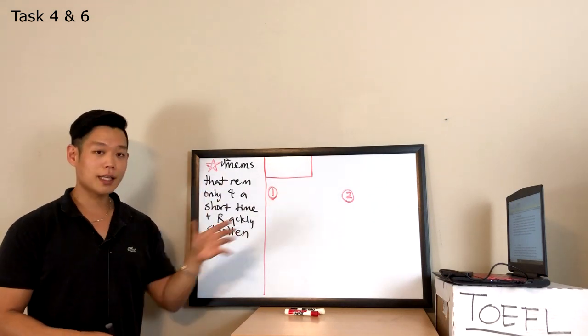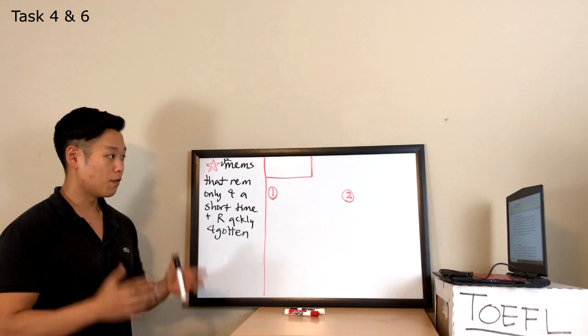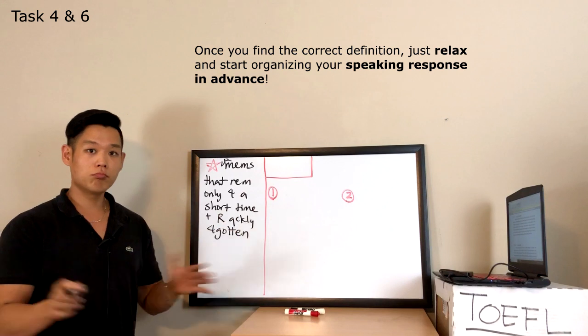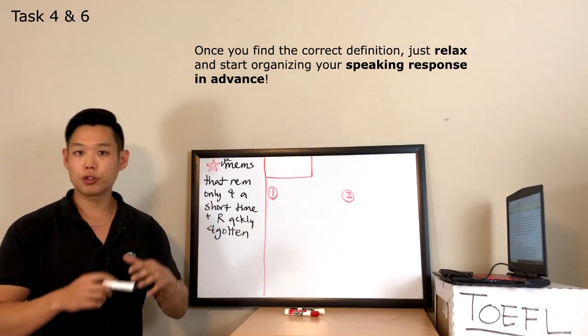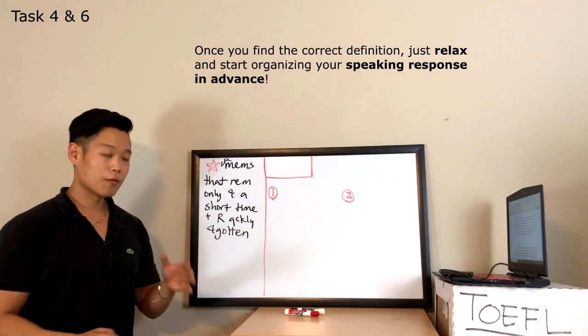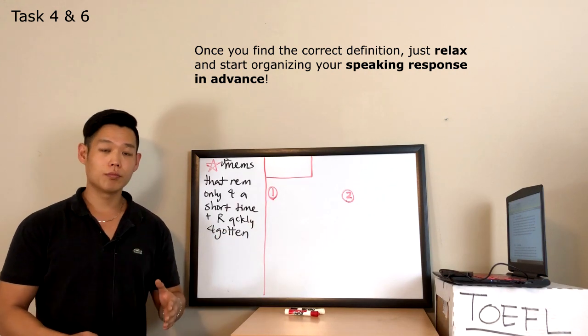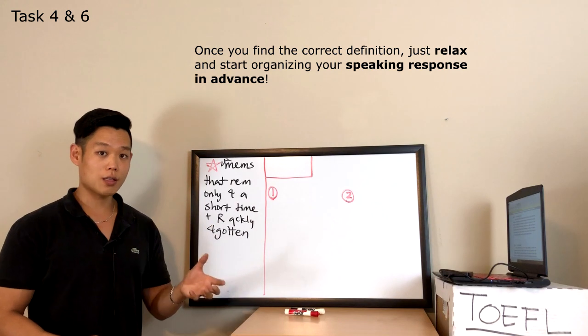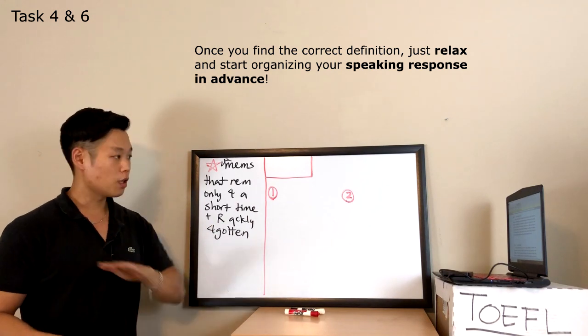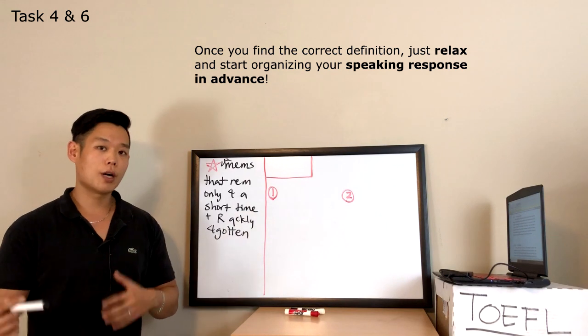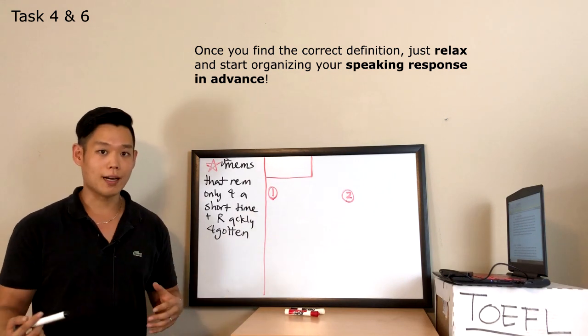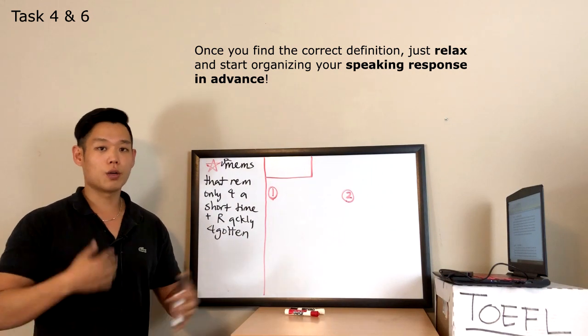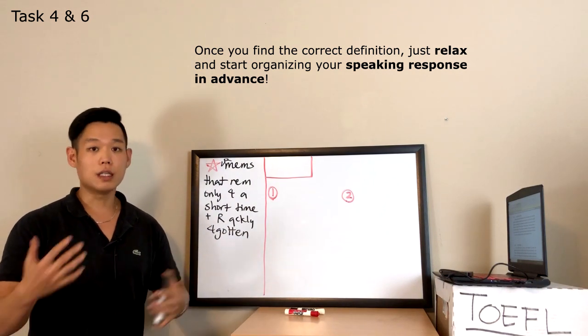All right, now, since the second sentence gave us the definition of short-term memories, you should have written that down. You should have paraphrased it. And then, just relax. Just chill out. Because all you need from the task four reading passage is the definition. Now, when you feel like you have the correct definition organized on the piece of paper that you're given, then you don't have to read the rest. If you have extra time during the reading passage reading time, then just rehearse your response in advance so that you're not too surprised and you remind yourself as to what you need to do.